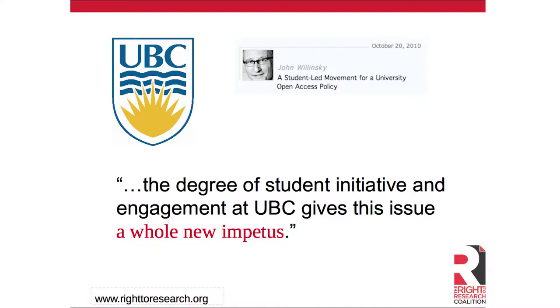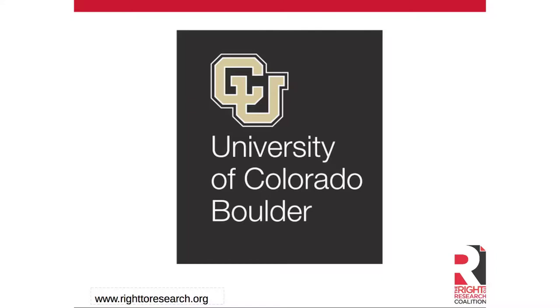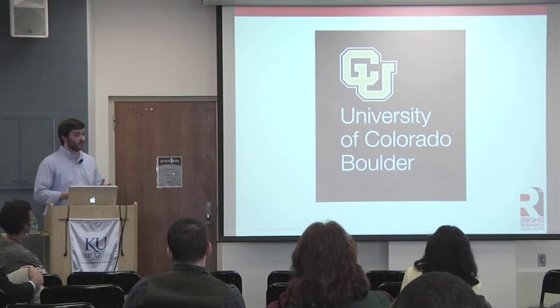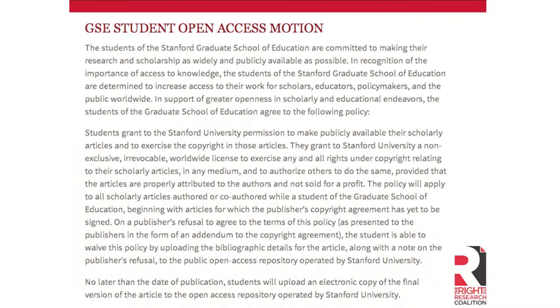We have active campaigns in other places like the University of British Columbia, and the University of Colorado at Boulder passed an open access policy statement earlier this year. KU has a wonderful institutional open access policy, but there's an addition graduate students might consider. In May of this year, the Stanford Graduate School of Education became the first place where graduate students actually voted an open access policy into place for themselves — agreeing to make all the articles they publish available through their institutional repository. It's very similar to KU's policy.